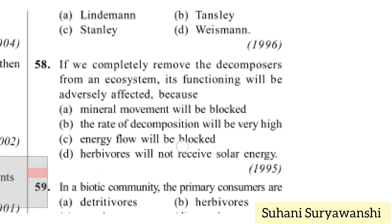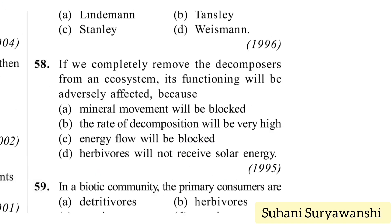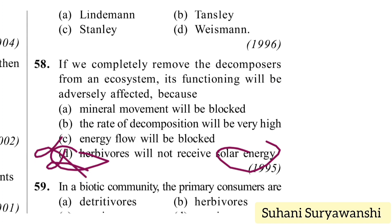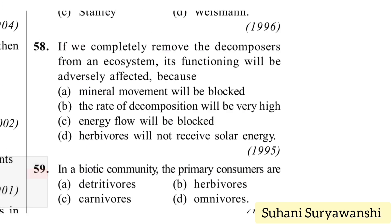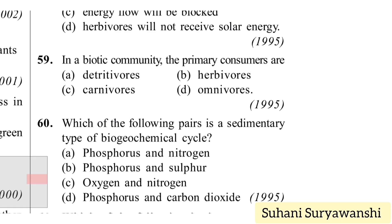If we completely remove decomposers from an ecosystem, its functioning will be adversely affected because mineral movement will be blocked. The rate of decomposition will be low, not high, because decomposers are absent. Energy flow will not be blocked. The correct answer is option A — mineral movement will be blocked because mineralization is done by decomposers.